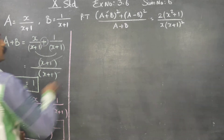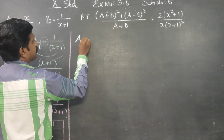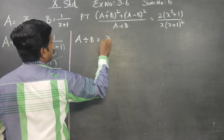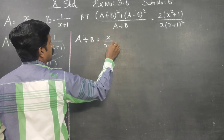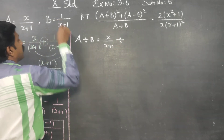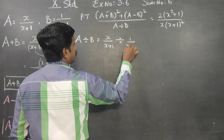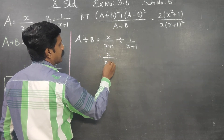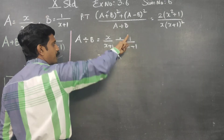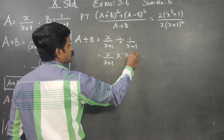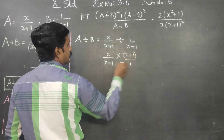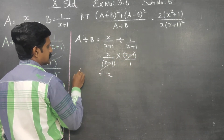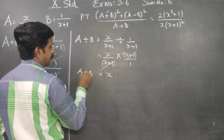Now entering into a divided by b. What is my a? x by x plus 1, divided by b which is 1 by x plus 1. Division means multiply by the reciprocal, so x plus 1 by 1. The x plus 1 cancels, giving x by 1, which is x. So a divided by b equals x.